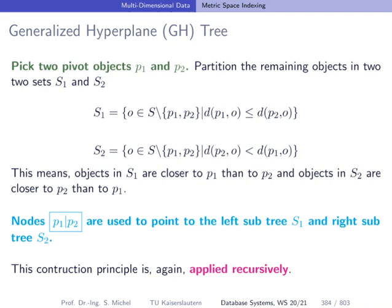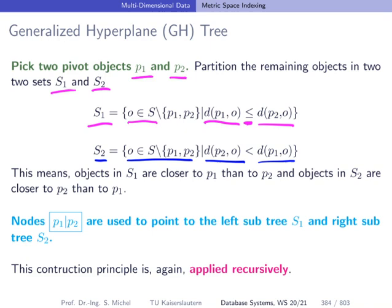The next tree we look at is the generalized hyperplane tree, or GH tree. We pick two pivots p1 and p2, and then partition the remaining objects into two sets S1 and S2. S1 is defined as the objects where the distance to p1 is smaller than the distance to p2. S2 contains those objects where the distance to p2 is strictly smaller than the distance to p1. We store the two pivots in our tree nodes, and these pivots create two subtrees S1 and S2. Applying this recursively, we end up with a binary tree — the generalized hyperplane tree.